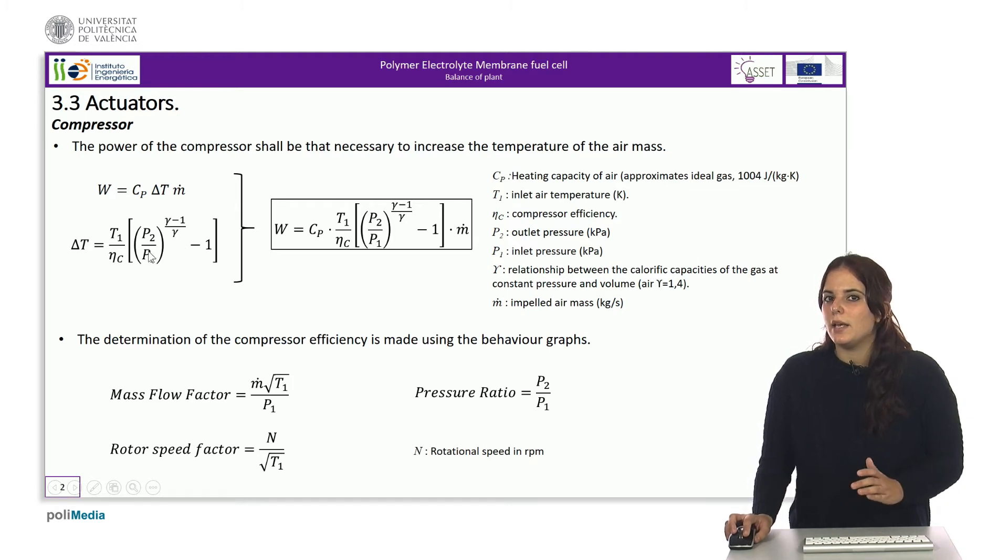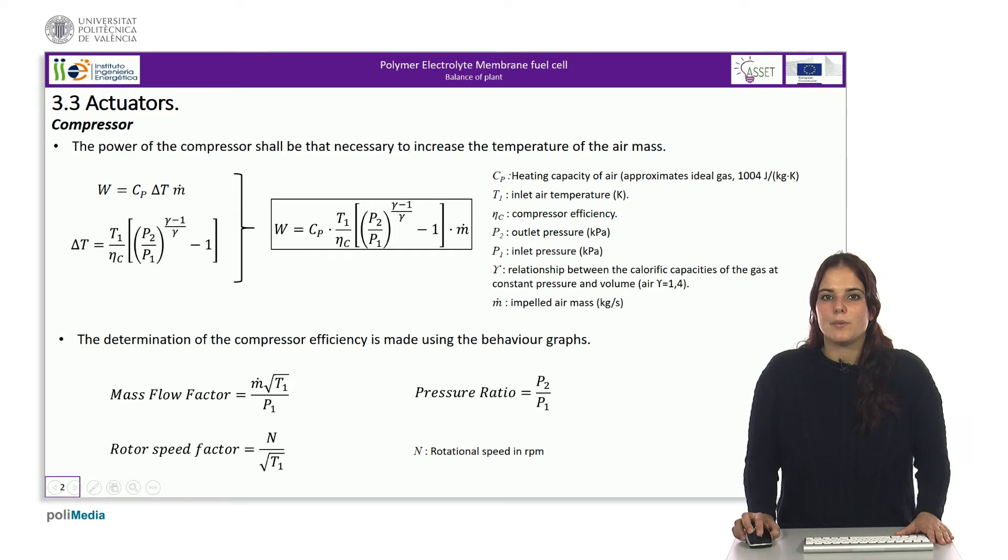The increase is affected by the initial pressure of the air and the compressor efficiency, as well as by the ratio of inlet and outlet pressures. The gamma ratio of the air's heating capacity is 1.4.